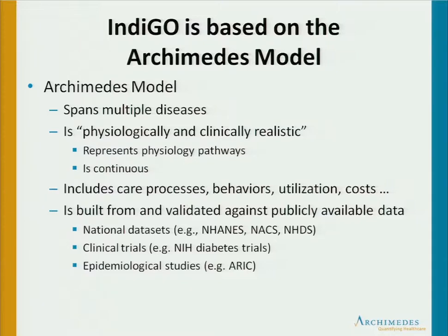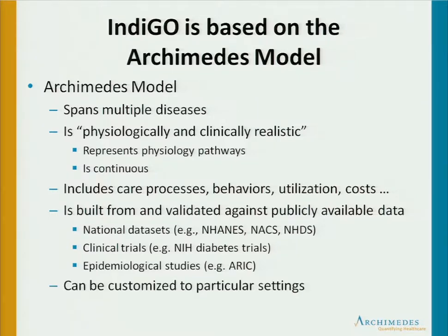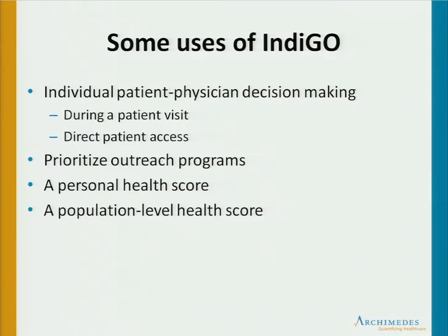The model is built from and validated against publicly available data — we rely very heavily on data sets like NHANES, the National Hospital Discharge Survey, and so forth. We use clinical trials extensively, along with NIH data sets, epidemiological studies, and things like that. Finally, Archimedes can be customized to different populations, and that's important because care differs in various settings.